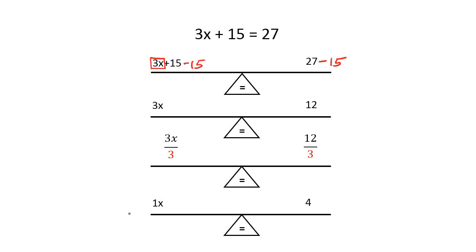So on the left, I have 1x. On the right, 12 divided by 3 is 4. Now 1x, or 1 times anything, is just itself. So the 1x can be just written as x. And so my solution turns out to be x equals 4.